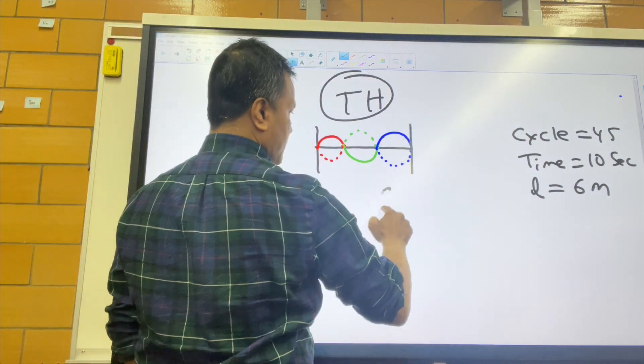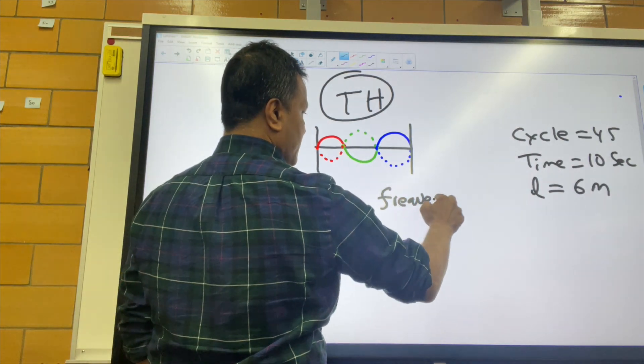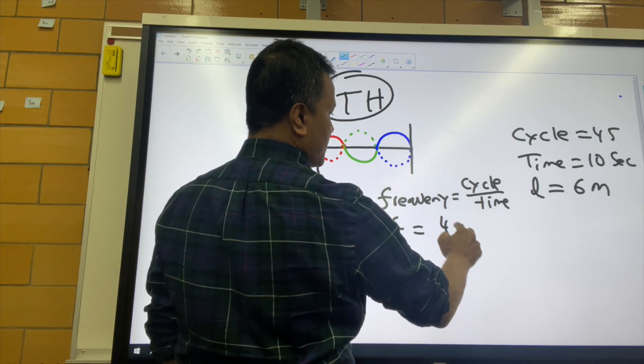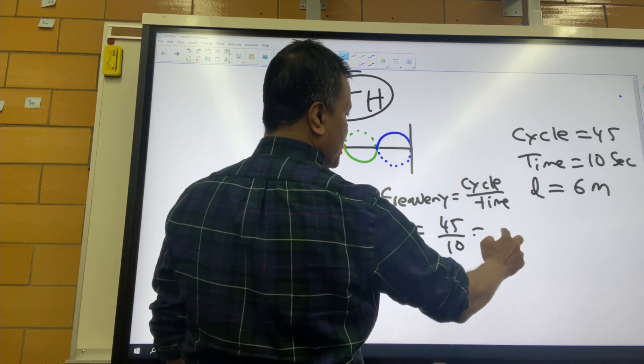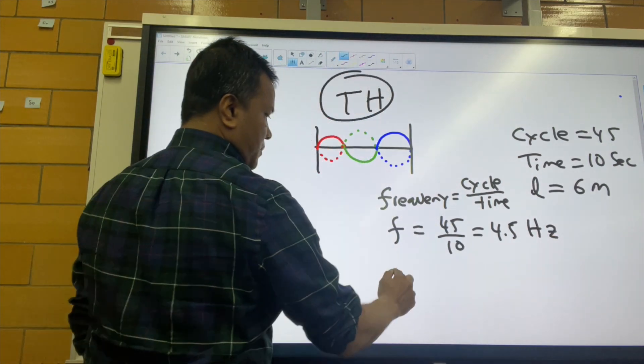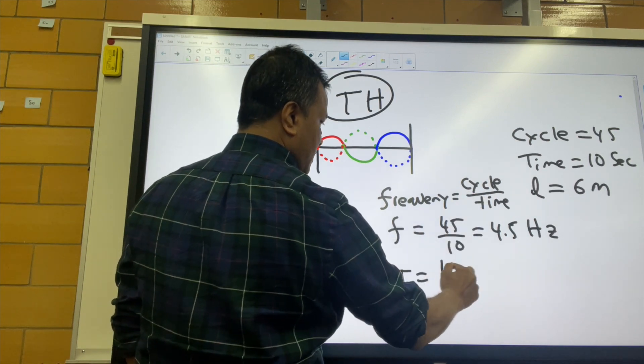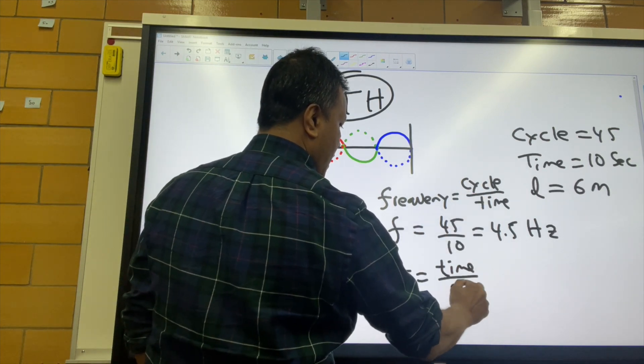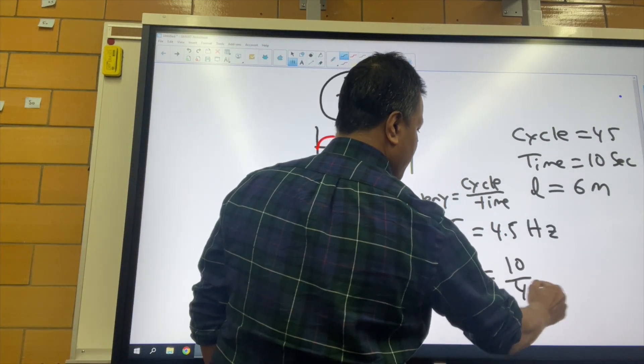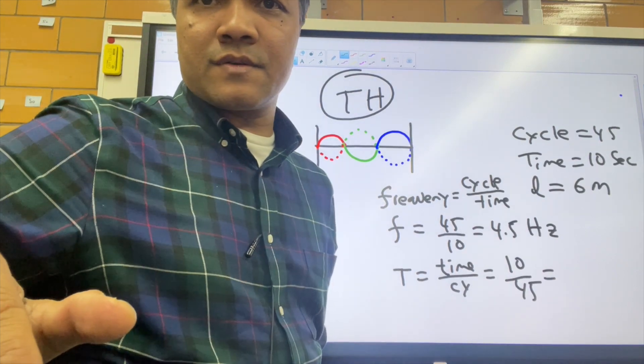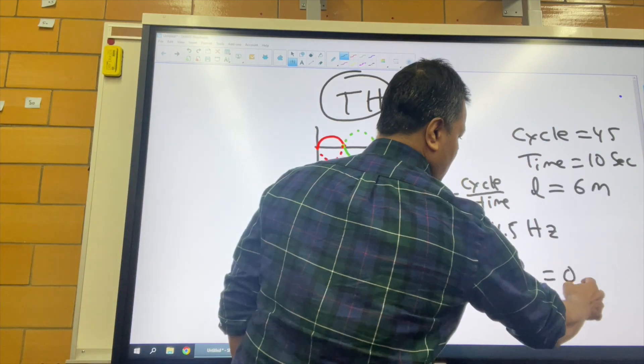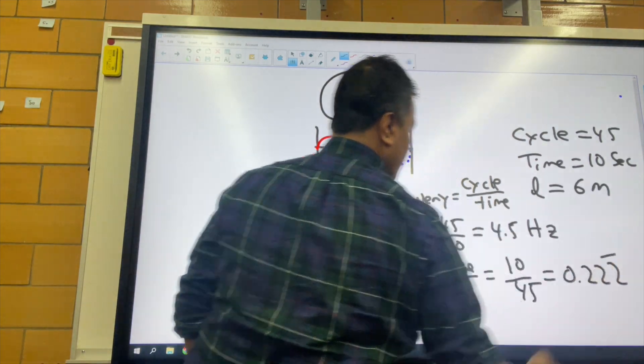Frequency is, let's start from here. The cycle is 45 and time is 10 seconds. So frequency is 10 over 45, which equals 0.222.